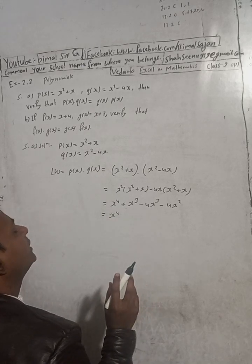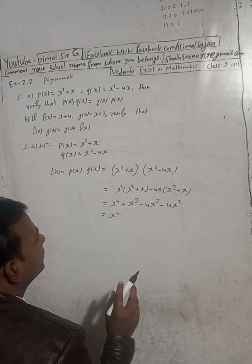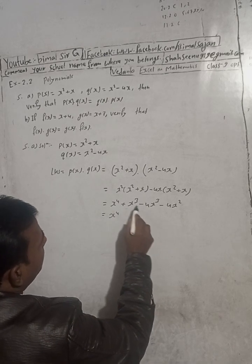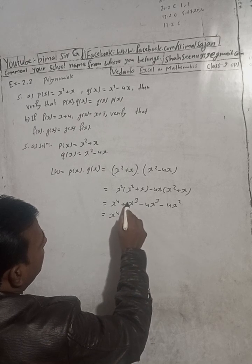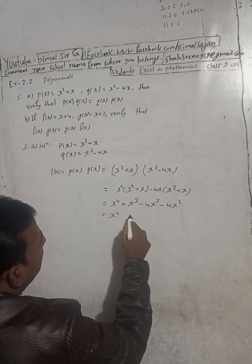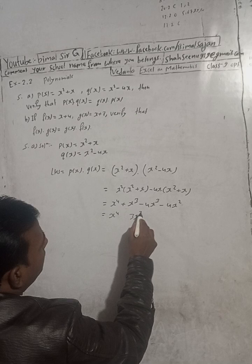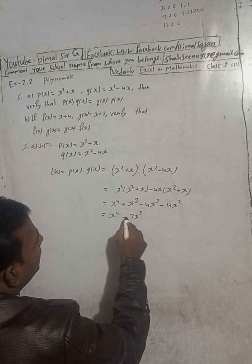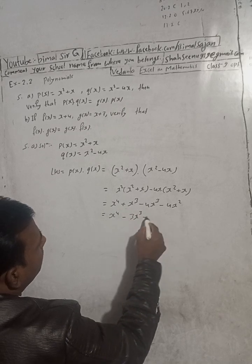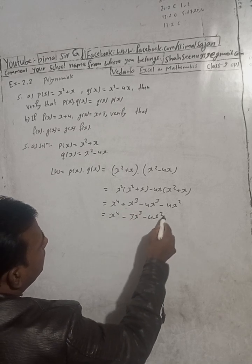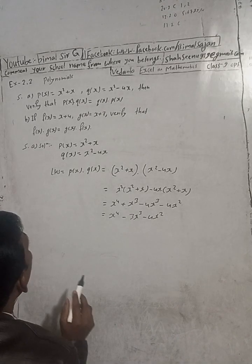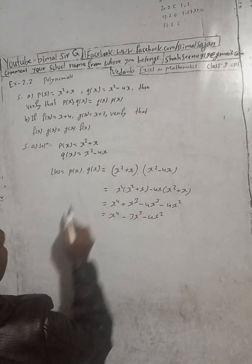The like terms are the x³ terms: +x³ and -4x³. Since they have opposite signs, we subtract: 4 minus 1 equals 3, and since 4 is greater and has the minus sign, we get -3x³. The -4x² remains as it is. So LHS = x⁴ - 3x³ - 4x².